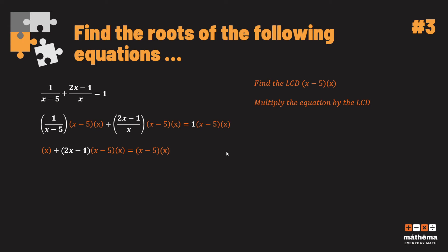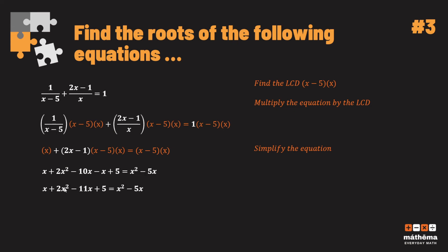Any number multiplied by 1 is itself, so the right side becomes (x − 5)(x). We now simplify: expanding (2x − 1)(x − 5) gives 2x² − 10x − x + 5, and x · x gives x² − 5x. Combining like terms: x + 2x² − 11x + 5 = x² − 5x. Equating to zero gives 2x² − x² − 11x + 5x + 5 = 0, which simplifies to x² − 5x + 5 = 0.